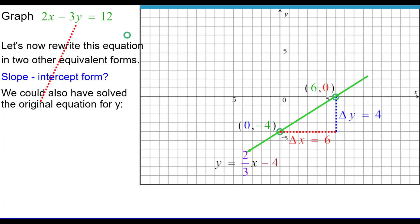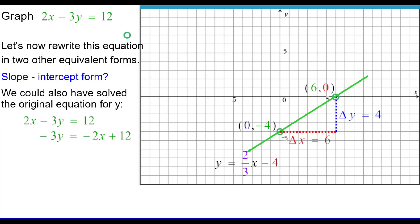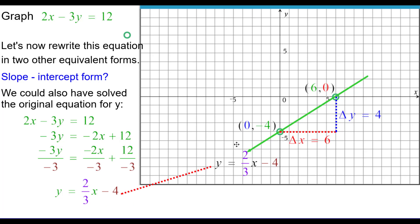We could also have solved the original equation for y algebraically. The first thing is to subtract 2x from each side, then divide each term by the coefficient of y, which is negative 3. Simplifying each of those expressions, we get y equals 2/3 x minus 4, which is exactly what we got when we did it graphically. So we can find the equation graphically or algebraically.